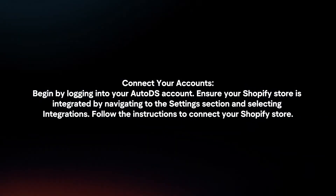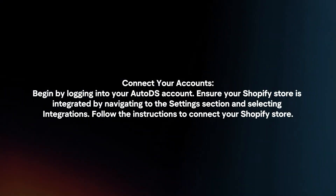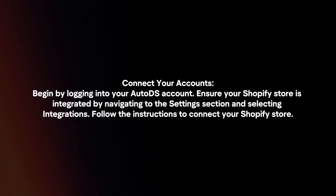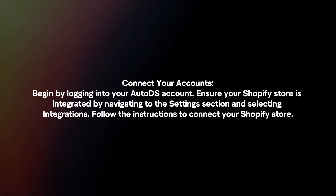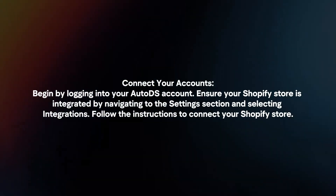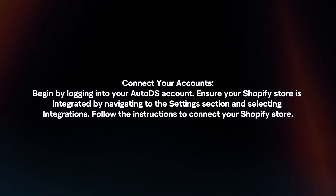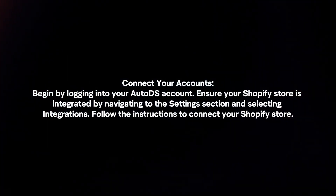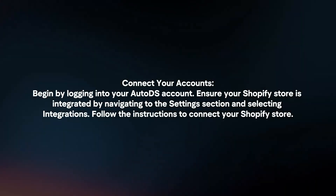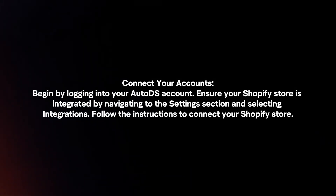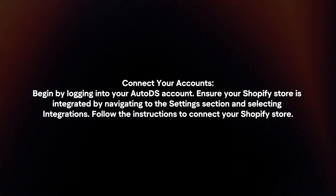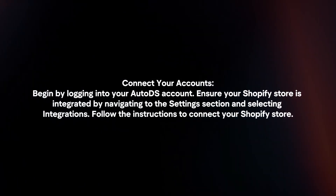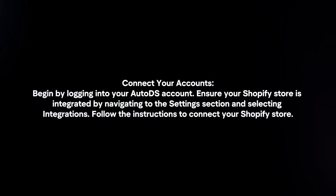Connect your accounts. Begin by logging into your AutoDS account. Ensure your Shopify store is integrated by navigating to the Selling section and selecting Integrations. Follow the instructions to connect your Shopify store.